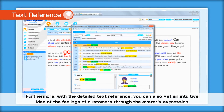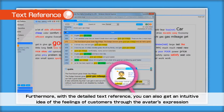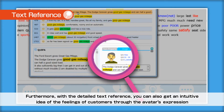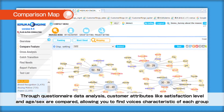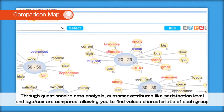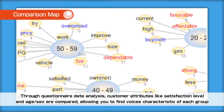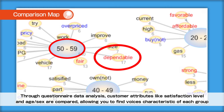Furthermore, with the detailed text reference, you can also get an intuitive idea of the feelings of customers through the avatar's expression. Through questionnaire data analysis, customer attributes like satisfaction level, age, and sex are compared, allowing you to find voices characteristic of each group.